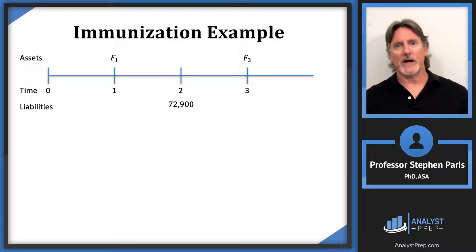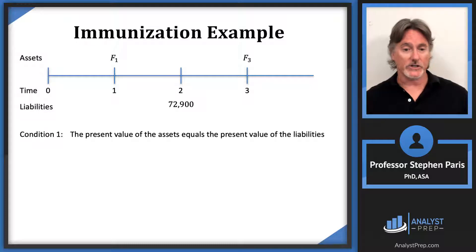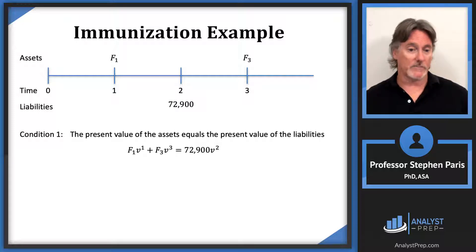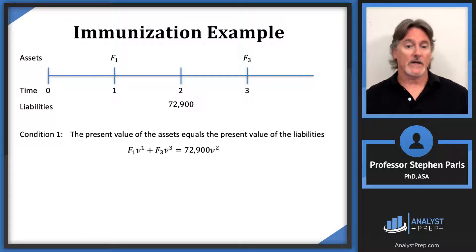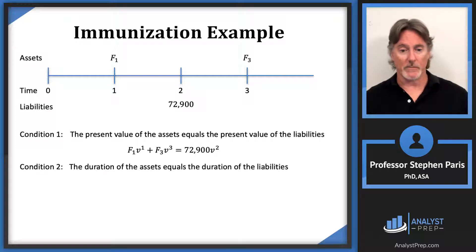Now let's think about the conditions required for immunization. The first condition is that the present value of the assets equals the present value of the liabilities. The present value of the assets is F1·V + F3·V³, and the present value of the liabilities is 72,900·V².